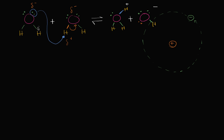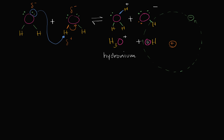So just like that, you went from two neutral water molecules to two ions. This one over here — the one on the left that is now H3O with a positive charge — is called the hydronium ion. And this one over here, that is OH minus, is called the hydroxide ion. Since it's negative, you could call it an anion.